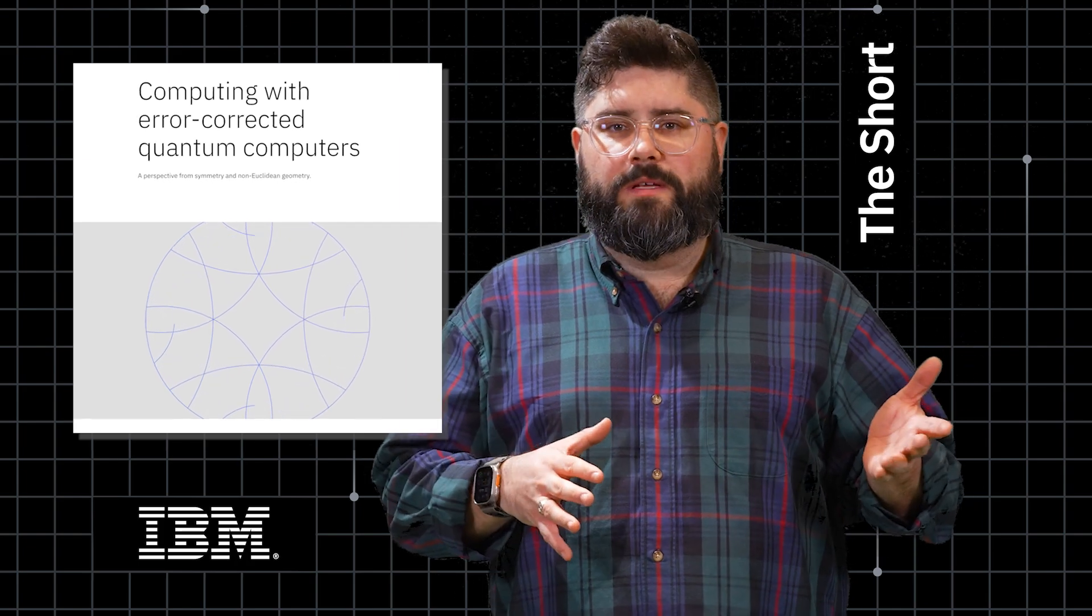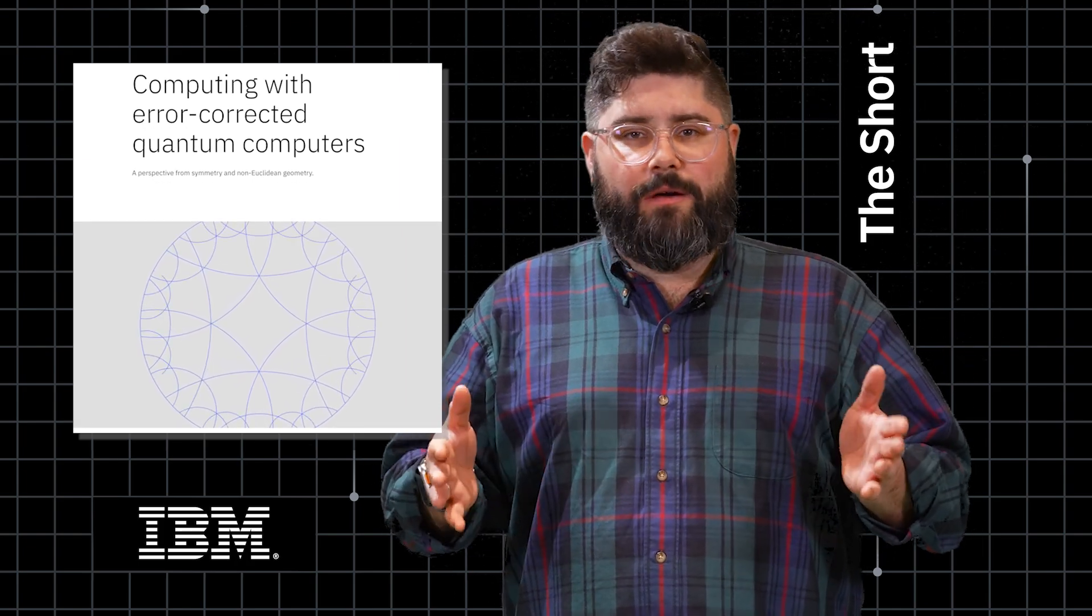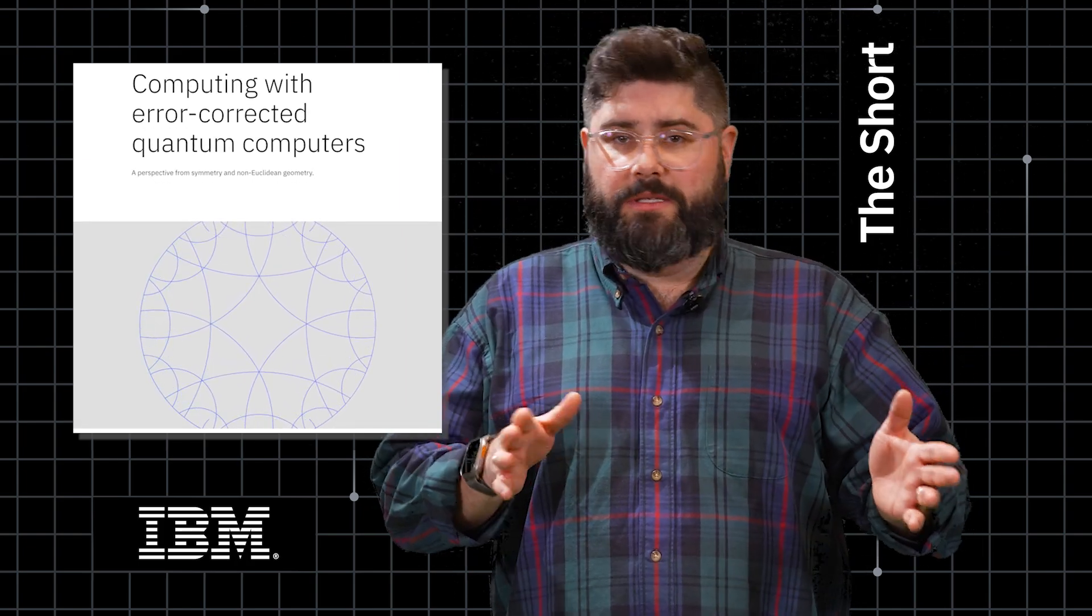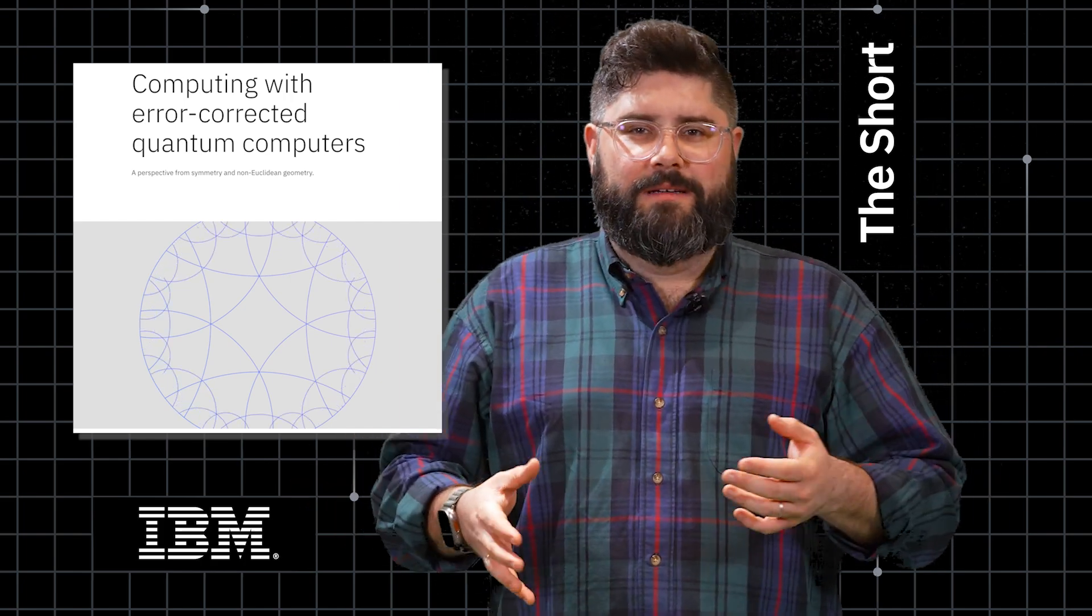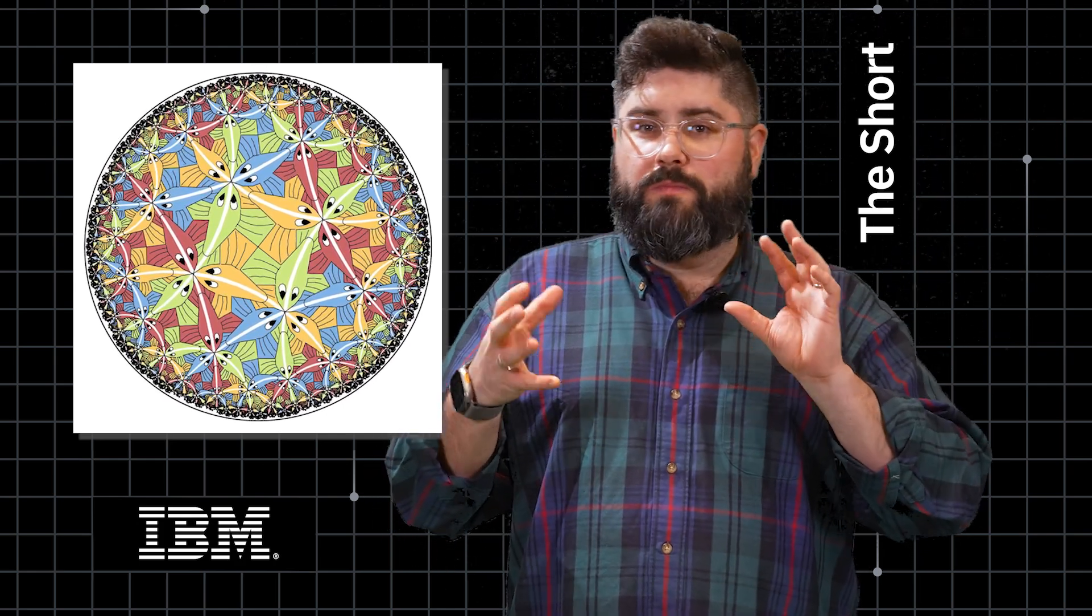So far, encoding qubits for error correction has been done by laying out qubits in understandable geometries, two- and three-dimensional spaces. But there are other ways of exploring space. One idea IBM Quantum is looking into is tiling qubits across more exotic spaces like three-dimensional tori.